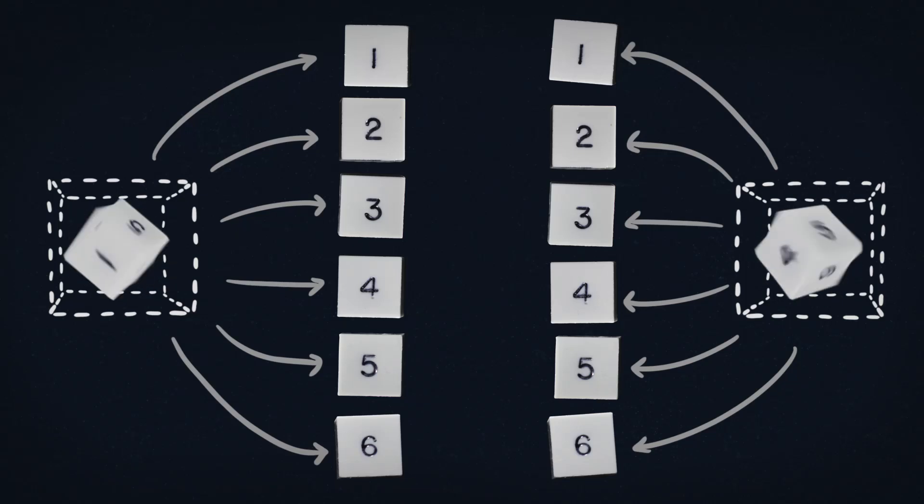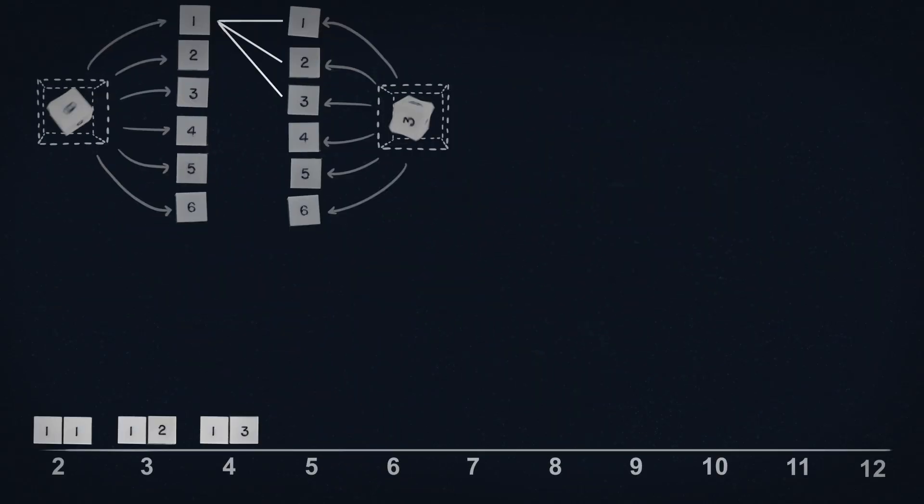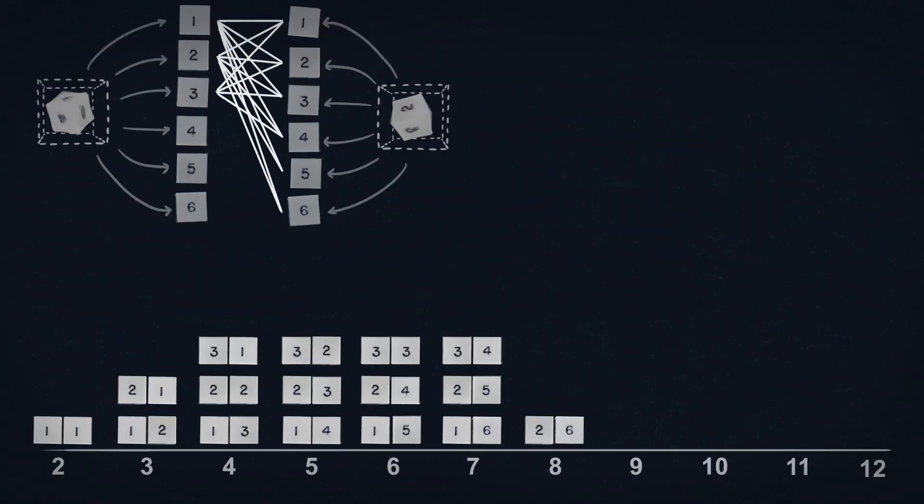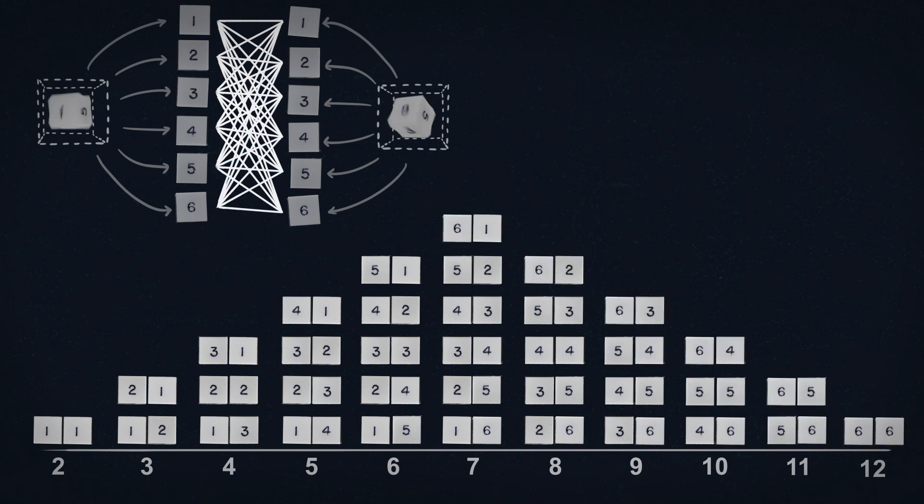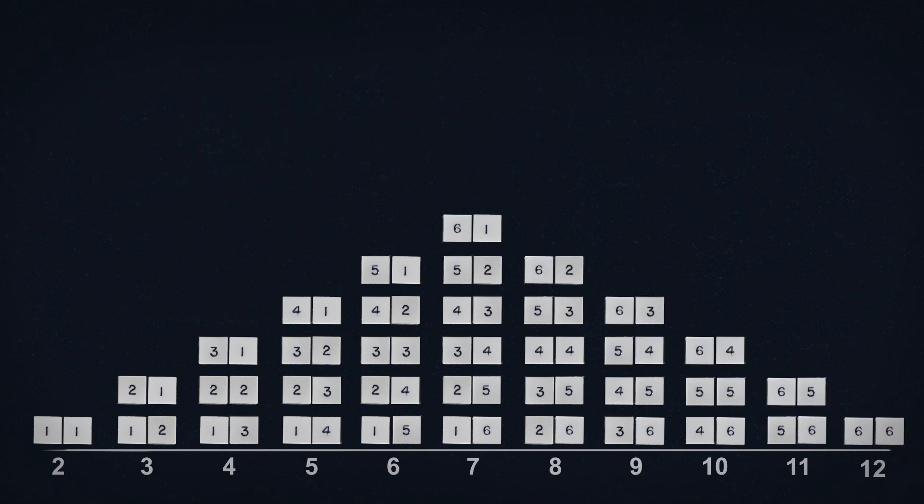What are the odds of rolling a total of 3 when rolling 2 dice? Each dice has the 6 possibilities. Their outcome is independent of one another, and we can get any combination between them, each combination having an equal probability of occurring. These are all the possible mutually exclusive dice rolls. We've got these 2 ways of rolling a 3. Of 36 possible rolls, there is a 5.6% chance of rolling a 3.